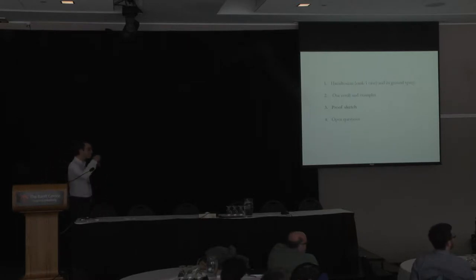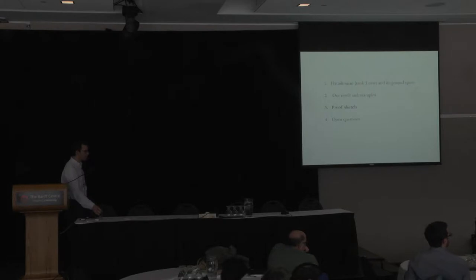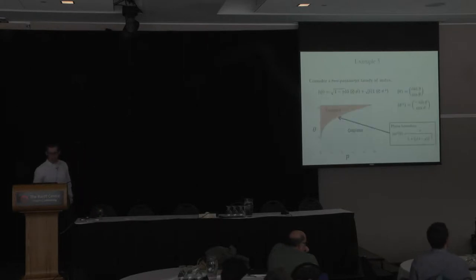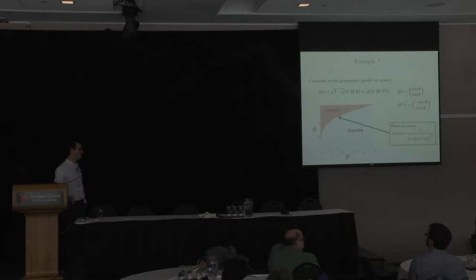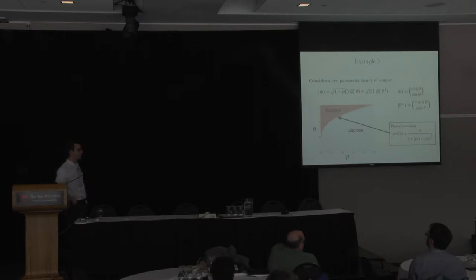It seems a little surprising because things have to be equal or to be gapless. So that seems like it should be a lower measure sketch. That's true, I believe, in the space of all two-qubit states. So in some sense, this example is a bit special. If you took another cut through the set of states that had two parameters, I think this would not be true.